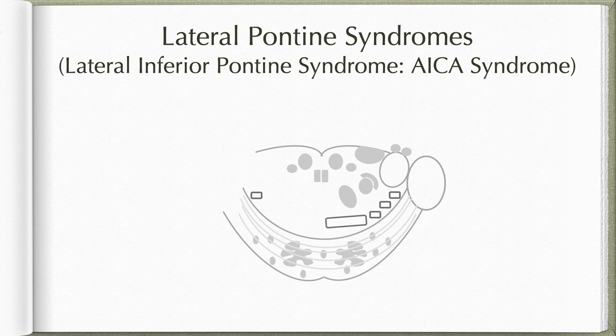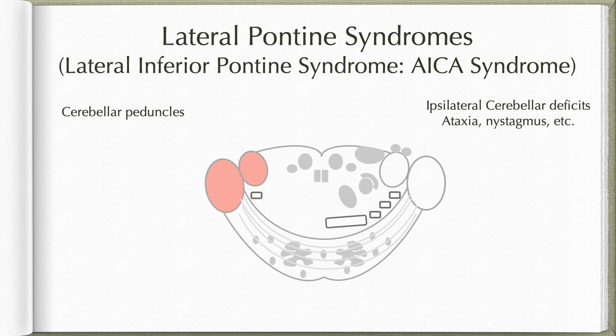Similarly, we have a set of lateral pontine syndromes. Again, based upon at what level the pons is affected, they are classified as lateral superior, lateral middle, and lateral inferior pontine syndromes. The lateral inferior pontine syndrome is also known as AICA syndrome — anterior inferior cerebellar artery syndrome — because it is usually due to involvement of that artery. Common features of lateral pontine syndromes include involvement of cerebellar peduncles resulting in ipsilateral cerebellar deficits, which may present as ataxia or nystagmus.